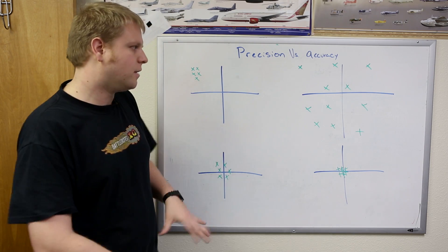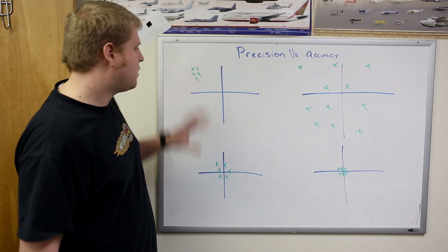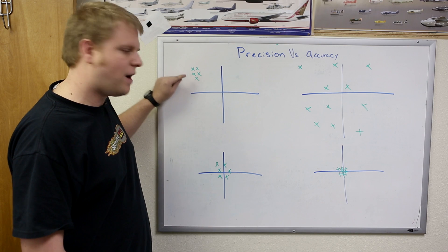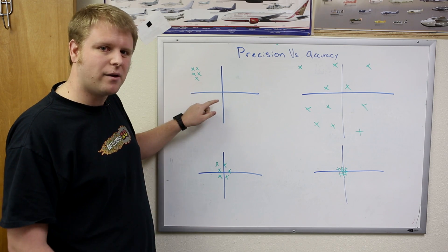Taking a look here, let's look at some of the differences. So in this system, this is our target, and this is where things ended up lying. This would be a system where you have high precision but low accuracy.